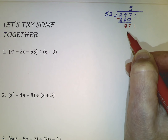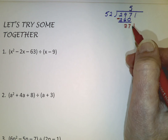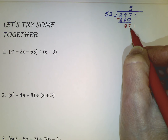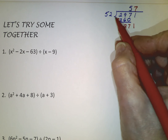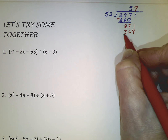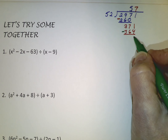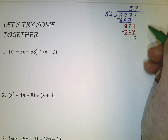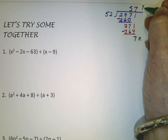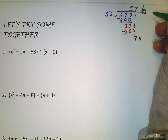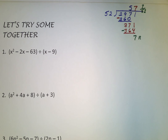Then we bring down the next number and keep dividing, so now we're taking 52 into 371. To figure out how many times, we try 5 into 37, which I believe is 7. If it's too big we'll drop to 6. So 7 times 2 is 14, carry the 1, giving 36. We subtract and have 7 left over with no more numbers to bring down. The 7 is the remainder — that's 7 out of 52 — so we write that remainder as a fraction: 57 and 7/52.